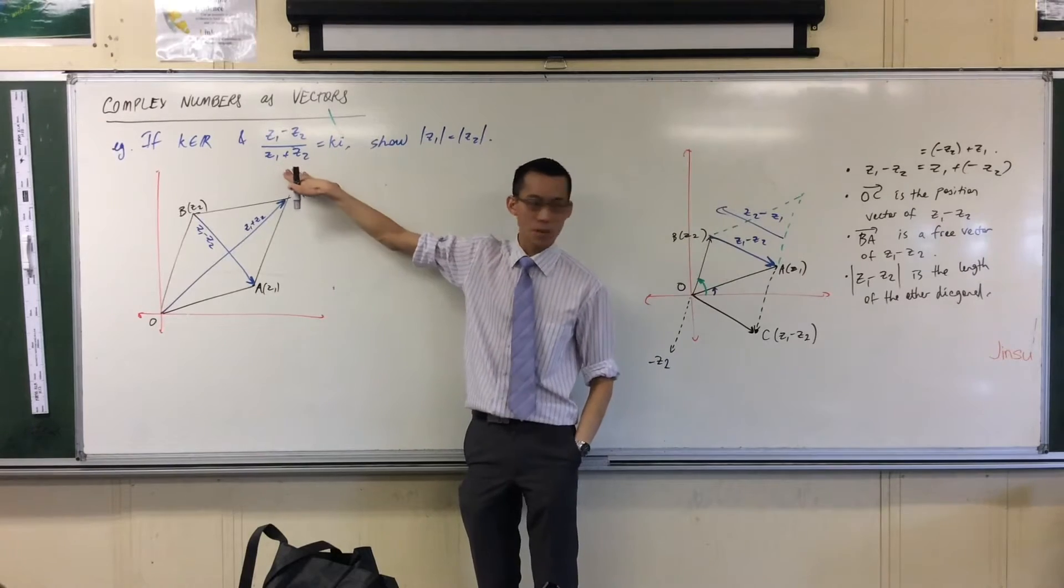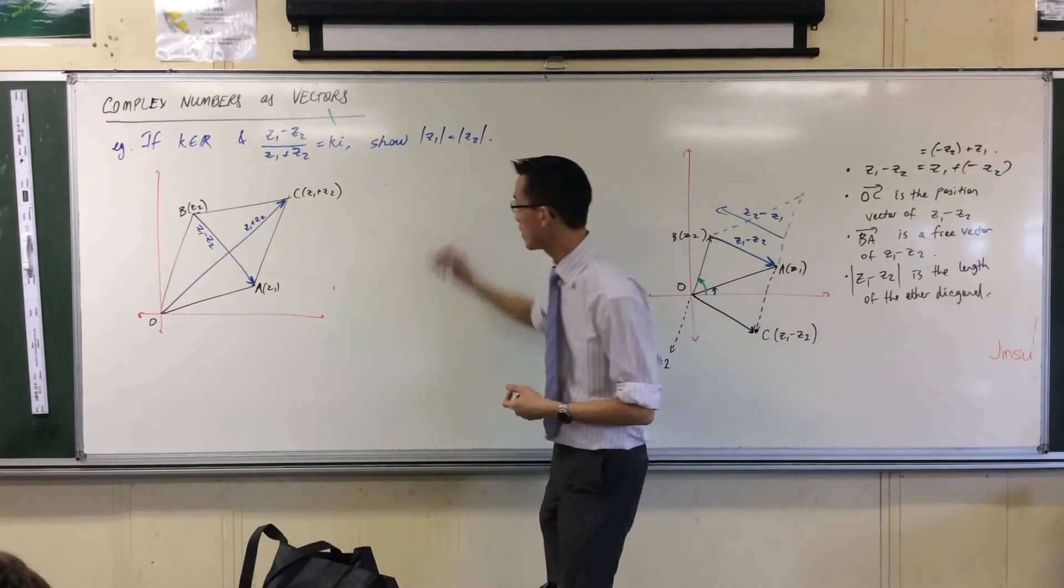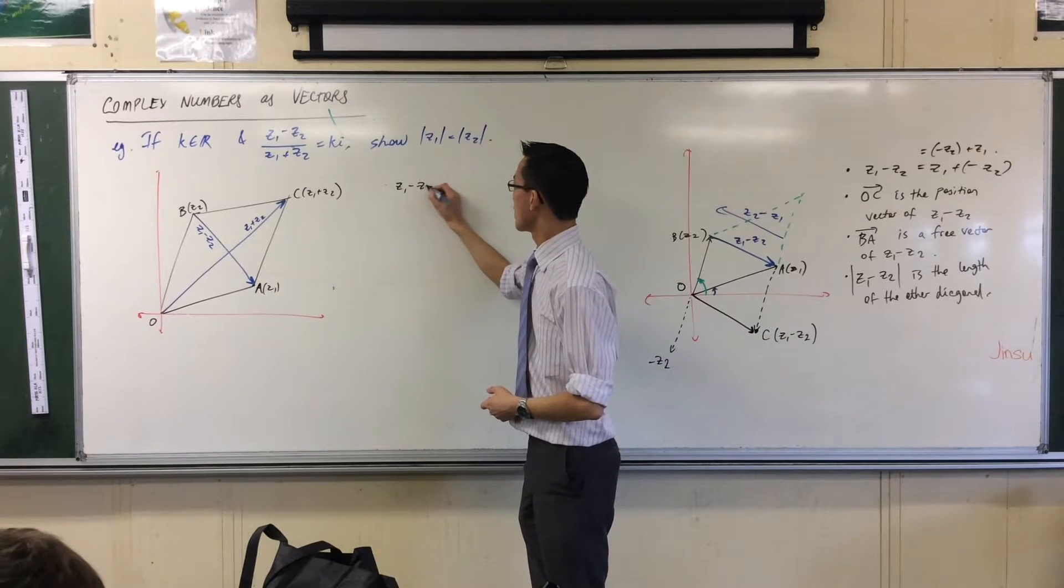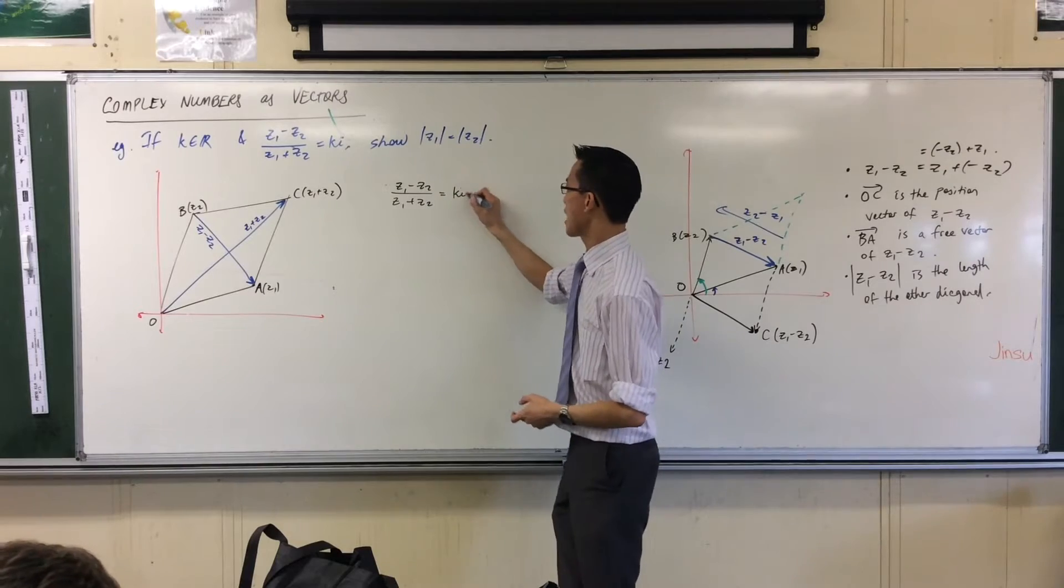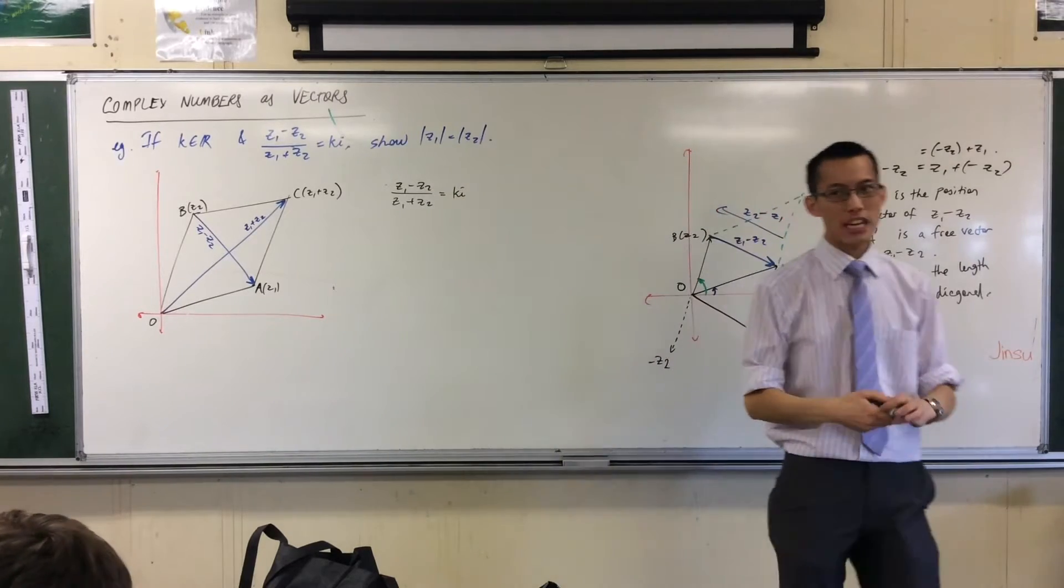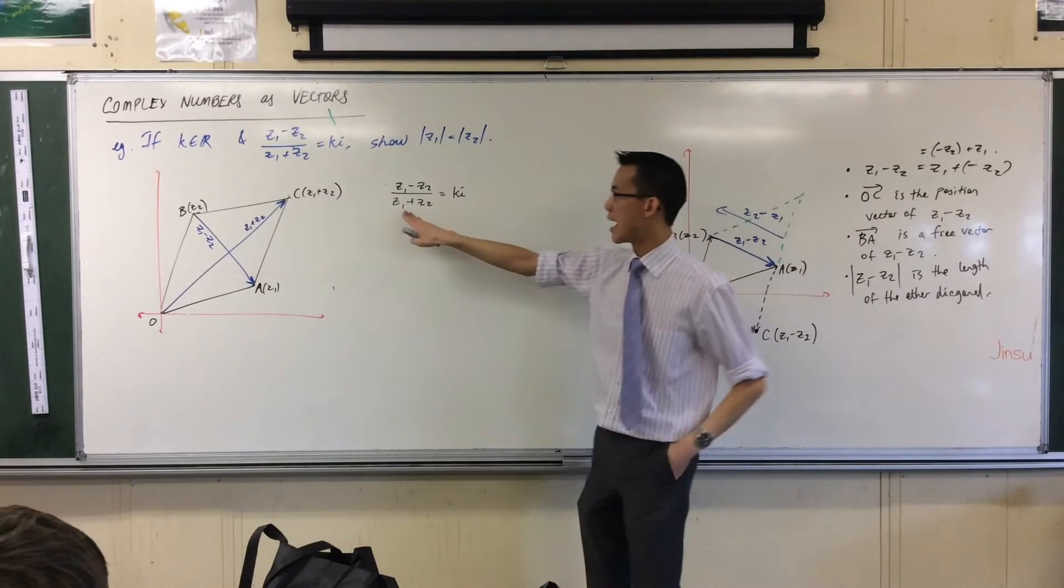This is what I know. They give this to me as a statement that is true, so I'm going to use that as my starting point. I've got z1 take away z2, z1 plus z2, and ki. Just see through how much stuff there is for a second.